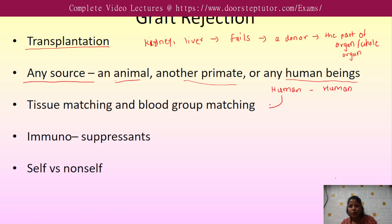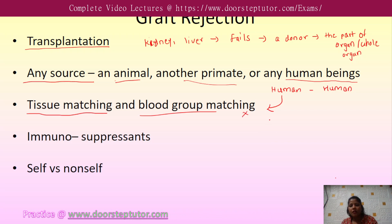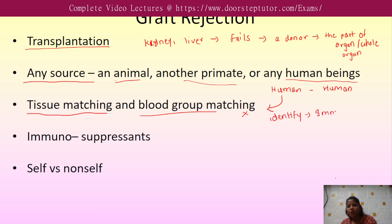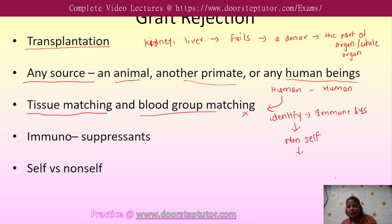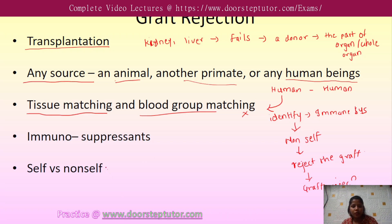When the blood group is matching and the tissue is also matching, transplantation proceeds. But when they are not matching, the immune system of our body identifies the tissue as non-self and will reject the graft. This is known as graft rejection, because our immune system can differentiate between self and non-self molecules.